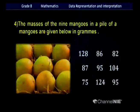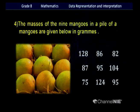We will move on to example number 4 — this time with some mangoes. The masses of 9 mangoes in a pile are given below in grams: 128 grams, 86 grams, 82 grams, 87 grams, 95 grams, 104 grams, 75 grams, 124 grams and 95 grams.